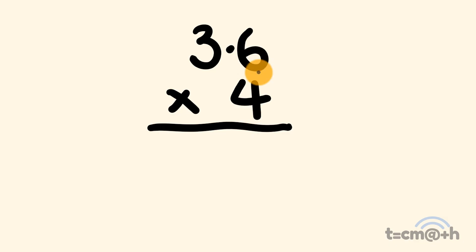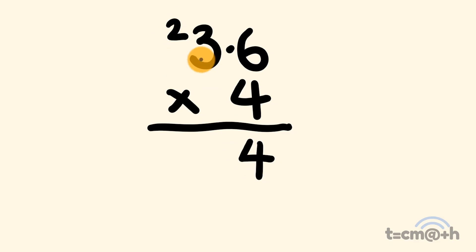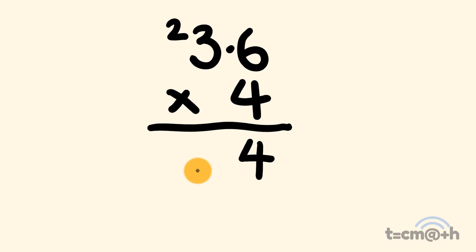So 6 times 4 is equal to 24. We put the 4 there and we carry the 2. Then we have 3 times 4 which is equal to 12, plus 2 which is equal to 14. So we have the answer of 144.